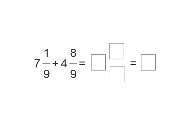So we see 7 and 1 9th plus 4 and 8 9ths. So we can first add the 7 and the 4 together. So 7 plus 4 equals 11.